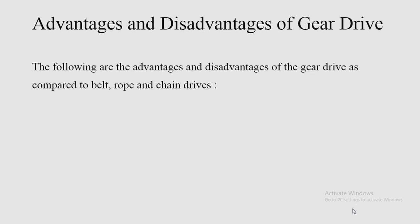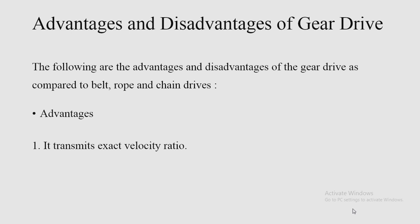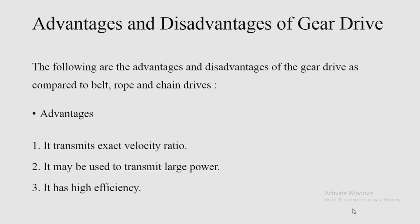The advantages of gear drive compared to belt drive, rope drive, and chain drive are: first, it transmits an exact velocity ratio with no slippage; second, it may be used to transmit large power, unlike friction wheels which are limited to small power; third, it has high efficiency due to minimum friction losses; fourth, it provides reliable service; and fifth, it has a compact layout.